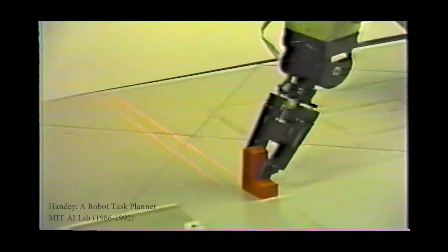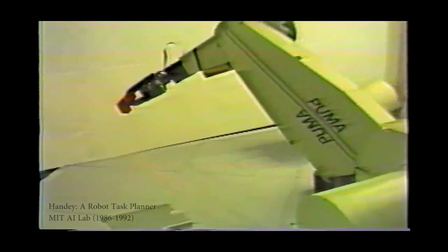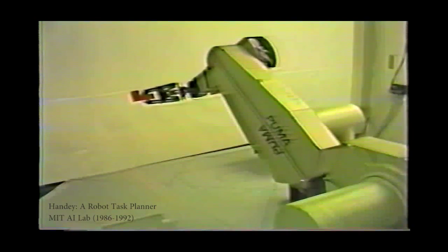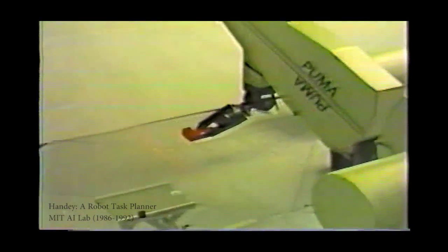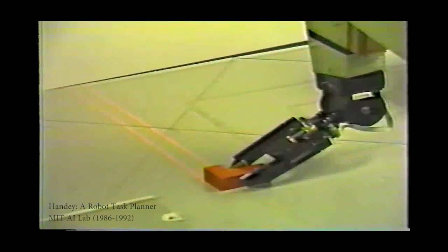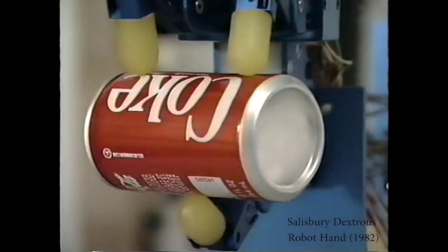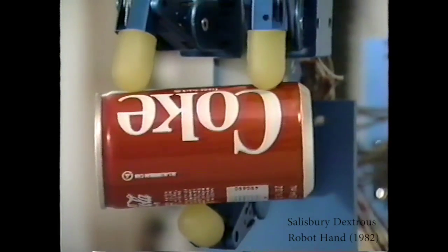Regrasps have been recognized as important for a long time. Here we see a video of the Handy system developed at MIT in the 1980s placing and picking an object, which is a common regrasp strategy for robots. Dexterous manipulation is another approach, demonstrated here by the Salisbury dexterous hand, which uses 9 actuators.